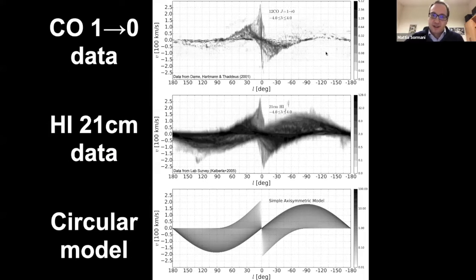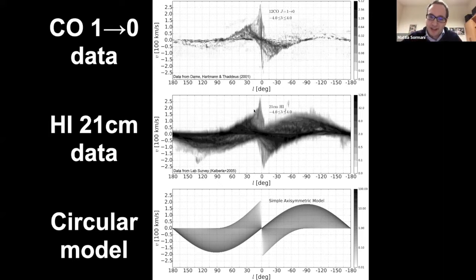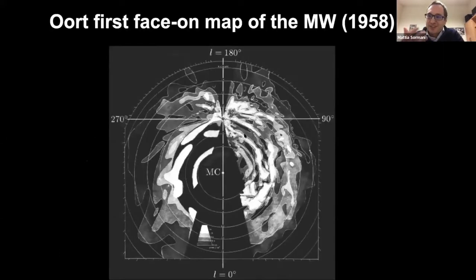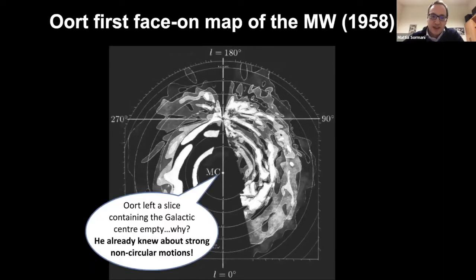Here is the CO data, the H1 data, and the circular model. The circular model captures the overall shape of the emission, but when you look at the details there are many things that are not explained, especially in the central region, which is what I want to focus on. Oort, already in 1958, reconstructed the face-on view map of the Milky Way and already recognized that something was off in the central slice — he already saw that the assumption of circular motion was not valid there.